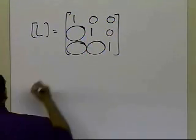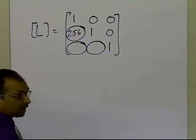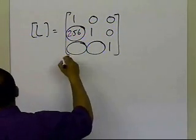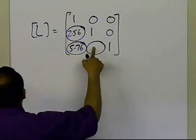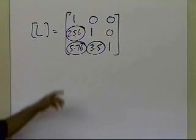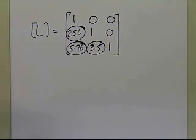Like for example, we said L21 is 2.56, because that is the multiplier which made that term to be 0 in the U matrix, and this L31 is 5.76, and this L32, which we just found out, is 3.5. So that's how you are able to establish what the lower triangular elements will be in the lower triangular matrix.